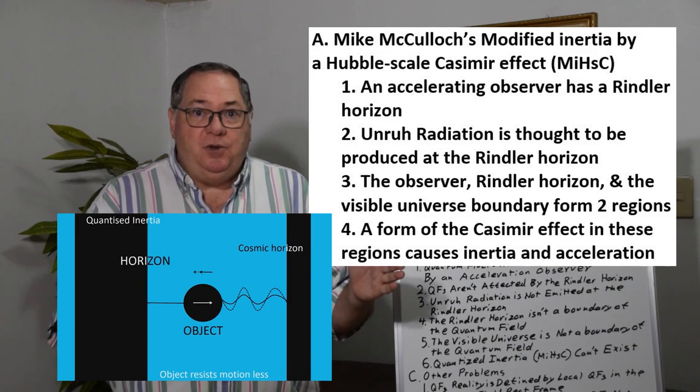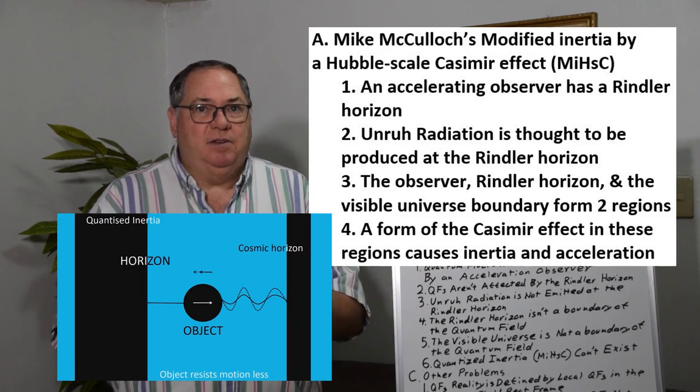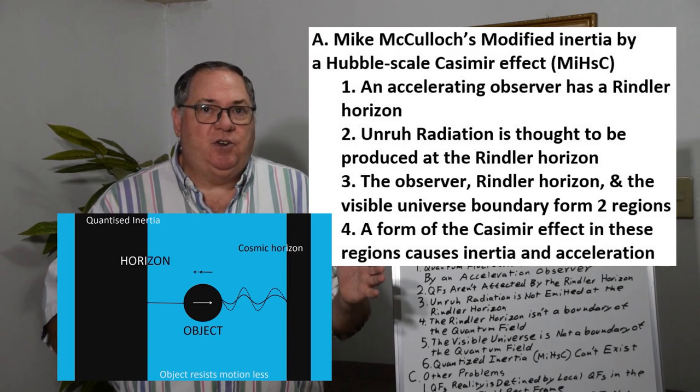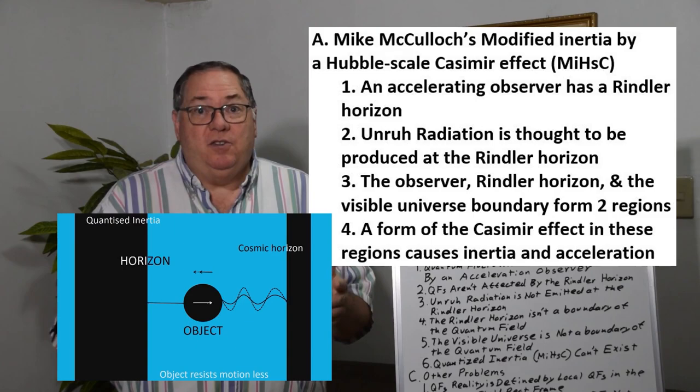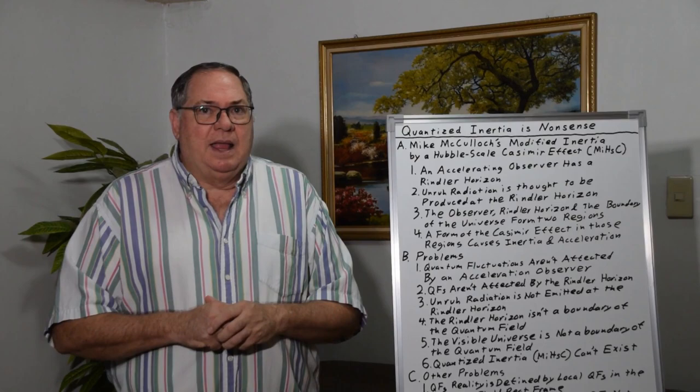This creates, in his mind, two cavities, two Casimir cavities, where you can get oscillations of the Unruh radiation waves. He considers this to create a differential in pressure that will either accelerate the body or provide inertial effects to the body.